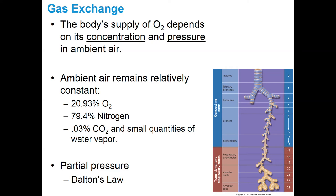In order to oxygenate the blood, that depends on two things: the concentration and pressure of oxygen in ambient air. The concentration of oxygen is fairly constant — in ambient air, oxygen takes up about 20.93% of that air, and the vast majority is nitrogen. The remainder is carbon dioxide, water vapor, and other gases in small concentrations.